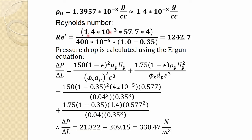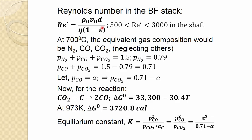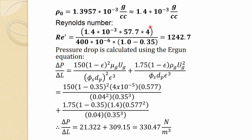Using density 1.4×10⁻³ g/cc, velocity 0.577 m/s, and particle size 4 cm, along with the given viscosity, the Reynolds number comes to 1,242. This falls within the applicable range for the Ergun equation.